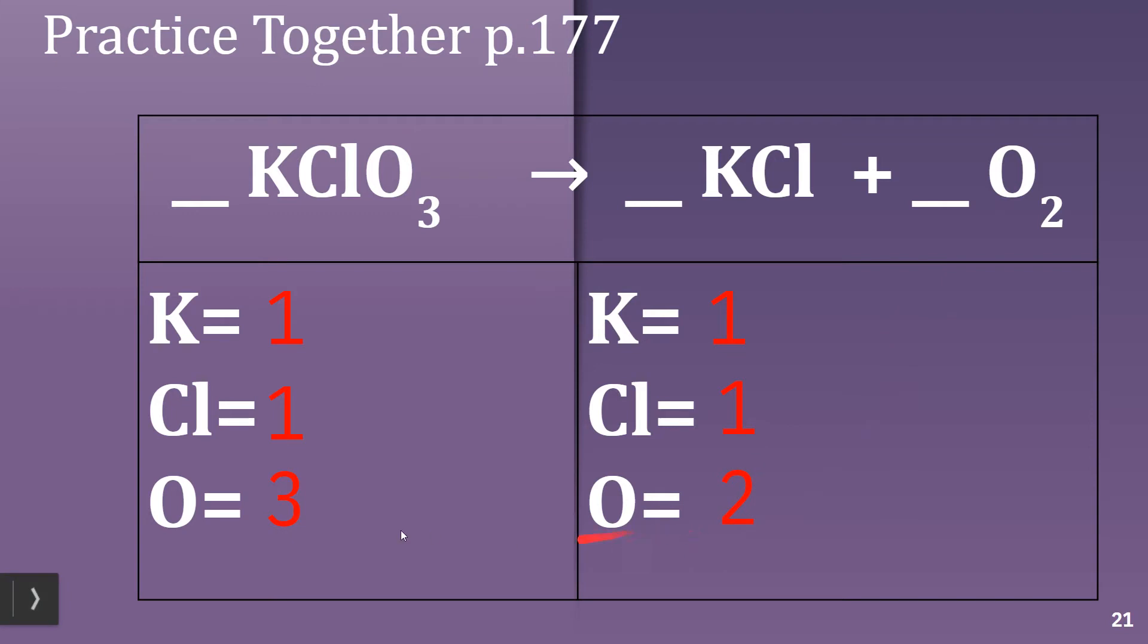So we write those in below on the left side. On the right side, do the same thing. We count those: 1 potassium, 1 K, 1 chlorine, and 2 oxygen. So is this balanced? No, it's not balanced because we have different numbers of oxygen on each side. These are balanced, but the bottom two are not.